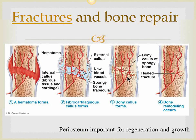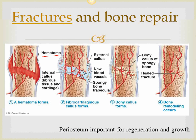Now let's look at fractures and bone repair and see the importance of the periosteum. When a bone fractures, because bone is very vascular, the blood vessels get torn and blood collects in the space between the two fractured fragments. This collection of blood is known as a hematoma, which helps to seal the two ends together temporarily.